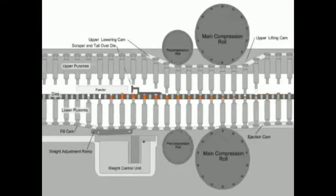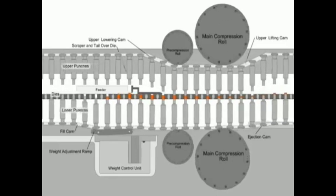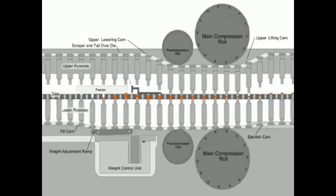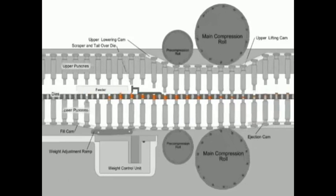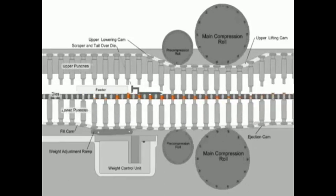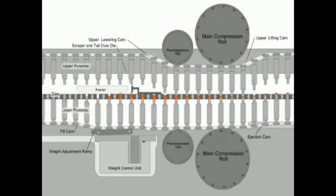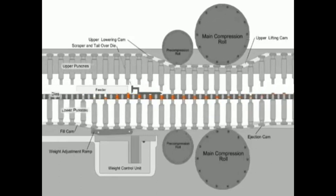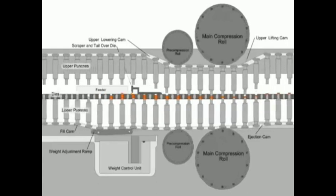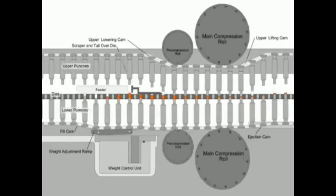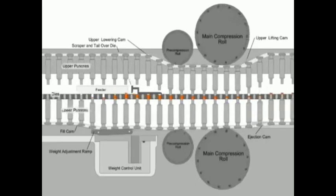You can see the process of punching of tablet in the animation here. First, filling is done by the feeder within the die cavity, and compression is done with the upper punch. It means pressure is applied with the help of punches. How that pressure affects the porosity of the powder within the die is of our interest today.